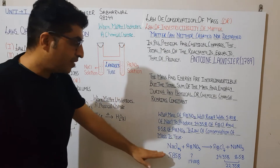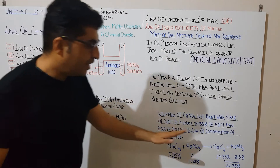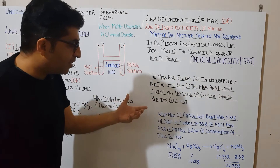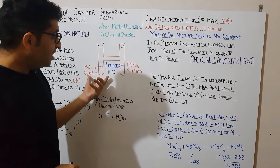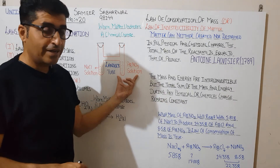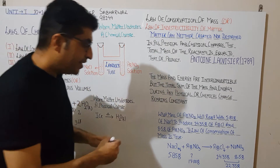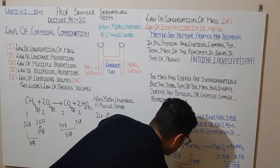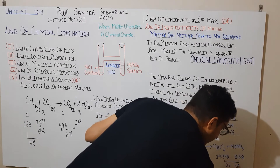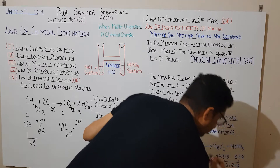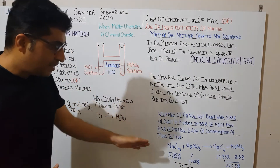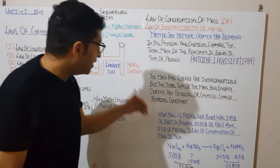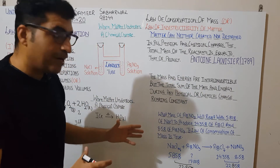We have 5.85 grams of NaCl solution and 17 grams of silver nitrate solution. Before the reaction, the total mass is 5.85 + 17 = 22.85 grams.